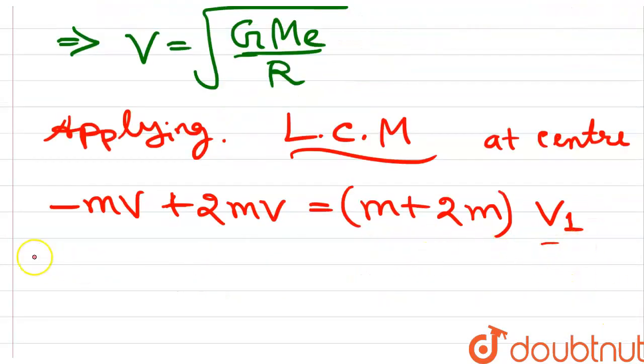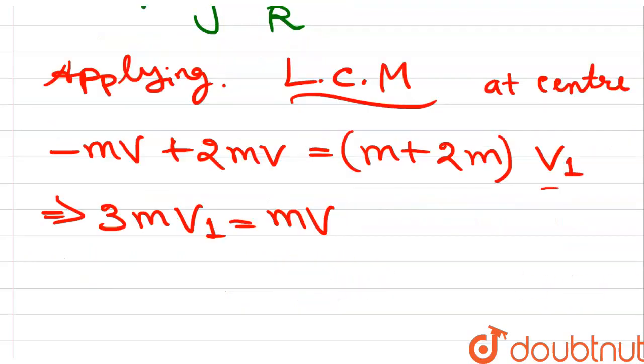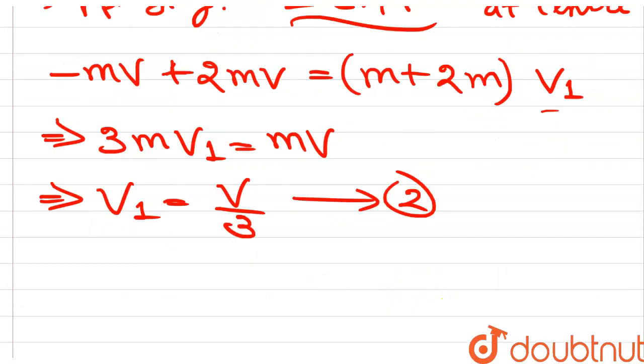So after sticking, the relation is 2m v₁ equals m v. Therefore velocity after sticking v₁ is equal to v by 3. This is equation number 2.